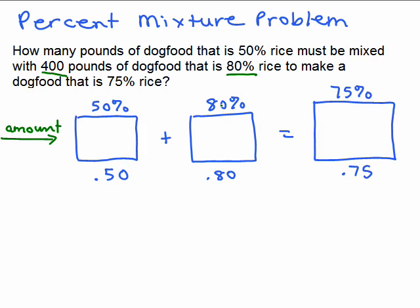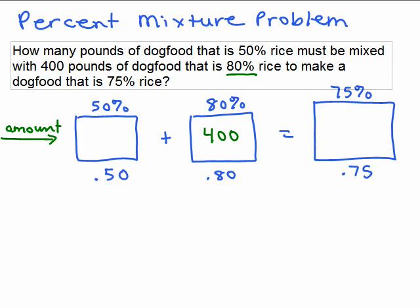This 80% vat contains 400 total pounds of dog food. That does not mean it's all rice — only 80% of that is rice. The question is how many pounds of the 50% dog food, and that's what we don't know. So we'll let that be our variable — let's call that X. We don't know how much is here, but again this is just the total amount of that package, not just the rice.